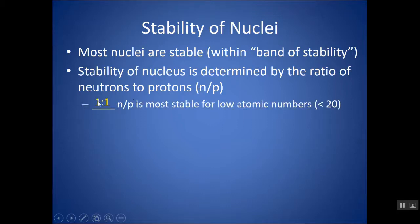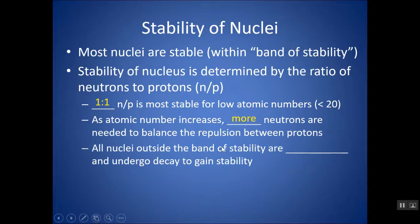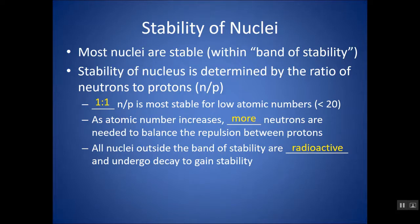At low atomic numbers — atomic number 20 and below — a 1-to-1 ratio of neutrons to protons is most stable. But as atomic number rises, you need more and more neutrons to balance out the repulsion between protons. If you don't have the right number of neutrons, we say the element or atom is radioactive, and it will decay or emit radiation in order to become more stable.